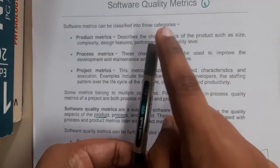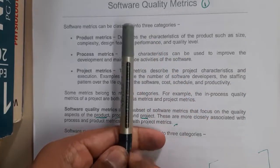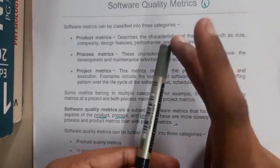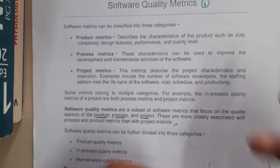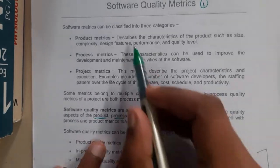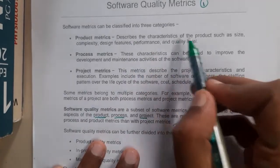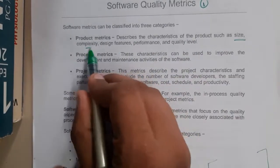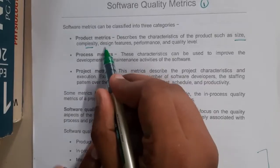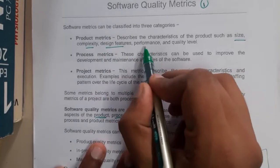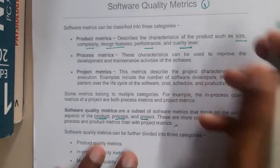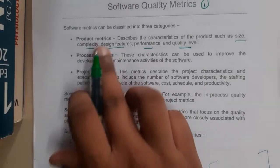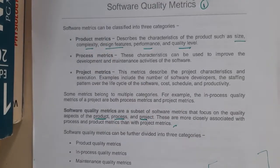Product matrix specifies the objectives or characteristics of the product — what is the length, size, and width. It describes characteristics such as size, complexity, design features, performance, and quality level. These are the properties shown in the product matrix.